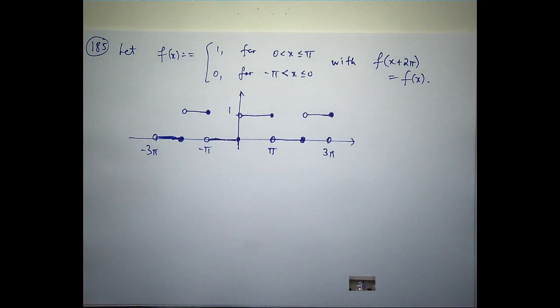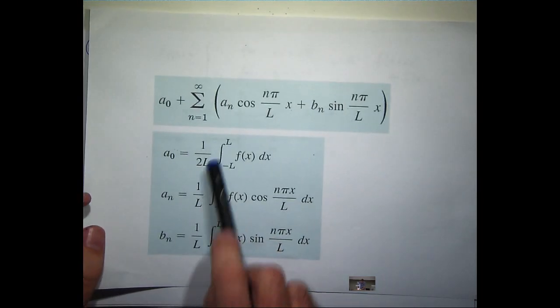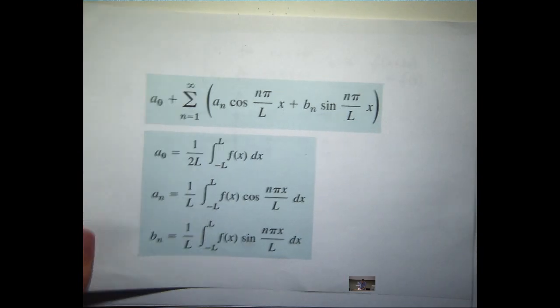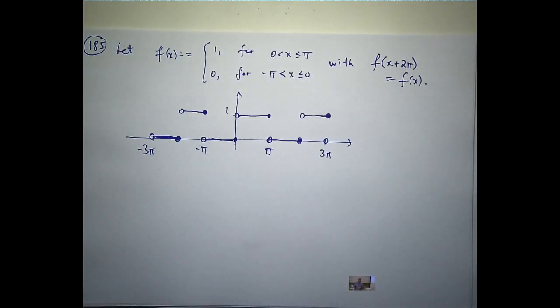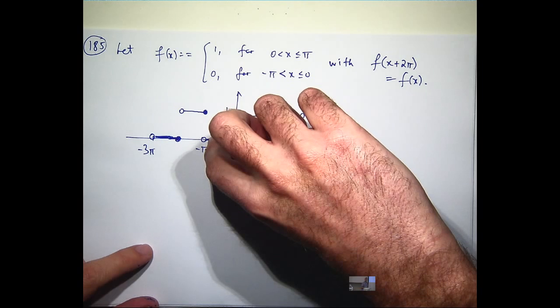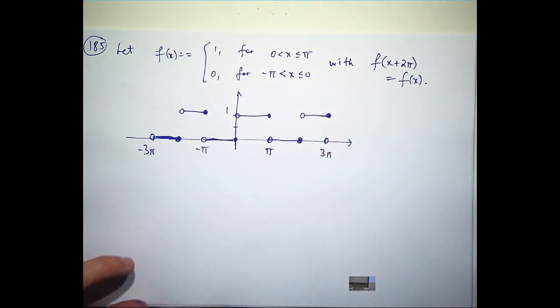So this is slightly annoying because we can't, when we want to calculate our Fourier coefficients, we can't just use the odd-even simplification. Can anyone suggest how we might make it... Yes, now you're talking. Yes, absolutely. Brilliant. Is that how you did it? Or you're just looking at it now? One way is to move everything down half a unit.